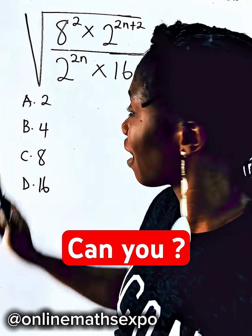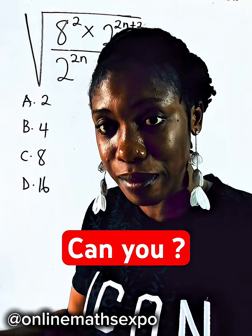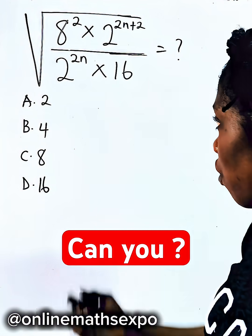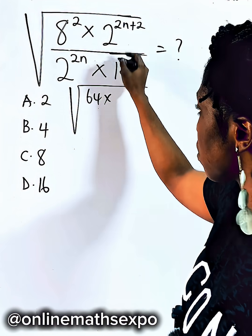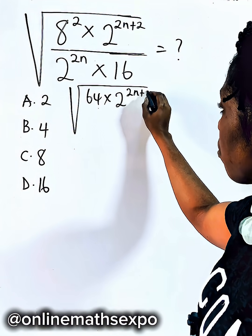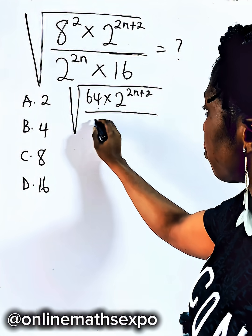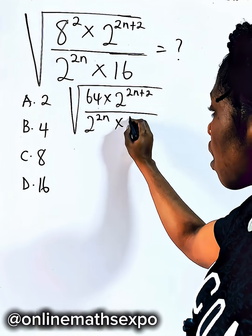To simplify this, remember, 8 squared is 8 times 8, and that will give us 64. So we're going to have square root of 64 times 2 to the power of 2n plus 2 divided by 2 to the power of 2n times 16.